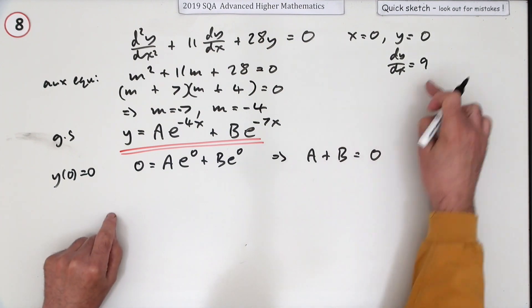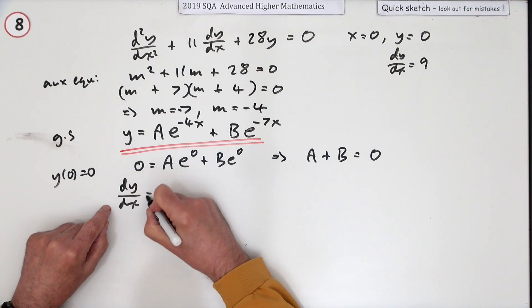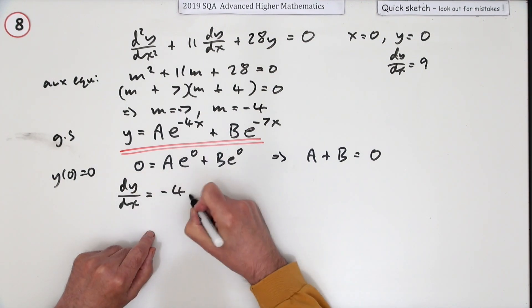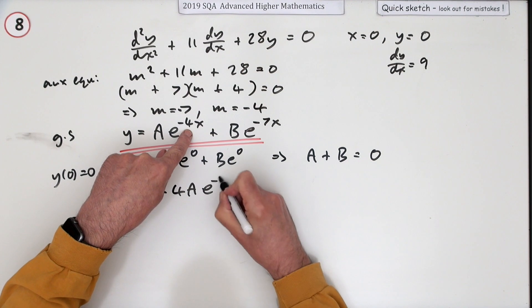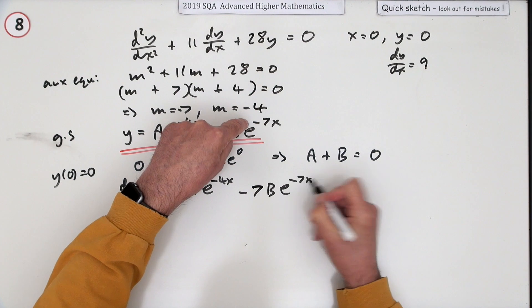Now to use the second one, differentiate dy/dx: -4Ae^(-4x) - 7Be^(-7x).